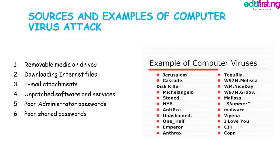These are ways through which your system or ICT device can be attacked by a virus. For example, removable media such as a USB storage device — when you plug it into an infected system, you can easily transmit a virus to your own computer or other devices. Also, when you download internet files, the likelihood of some of them being infected or infecting your device is very high. All these listed are sources of getting or infecting your devices with a virus.